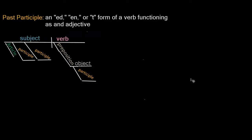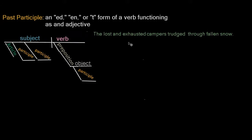Now, along with present participles, we also have past participles. A past participle is an -ed, -en, or -t form of a verb functioning as an adjective. So we have this example sentence: 'The lost and exhausted campers trudged through fallen snow.' We have four words here that look like verbs: 'lost' — the past tense of lose — 'exhausted' — the past tense of exhaust — and 'fallen' — the perfect form of the verb fall. Our main verb is 'trudged,' and it's an intransitive verb because we'll have no direct object. It is an action verb.